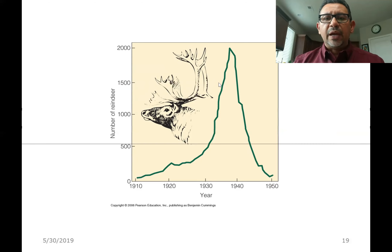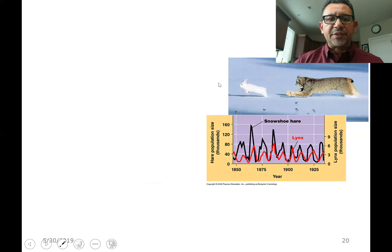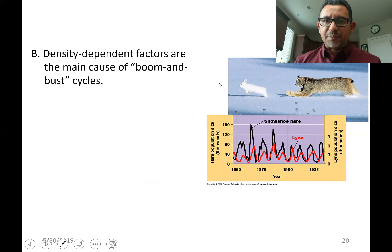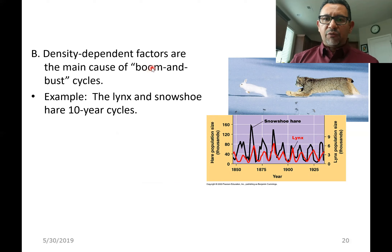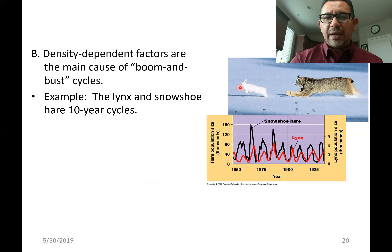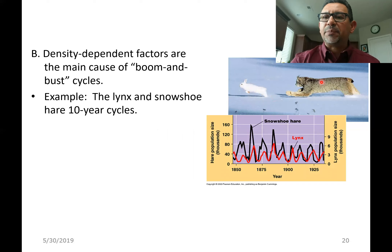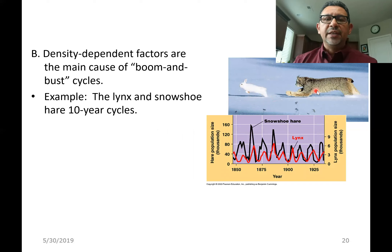Let's continue exploring, because density-dependent factors are also responsible for population cycles — sometimes described as boom and bust. Take a look, for example, at the snowshoe hare, a relative of rabbits and hares, and its predator the lynx, an animal that looks similar to the bobcats we can find in the Pacific Northwest.